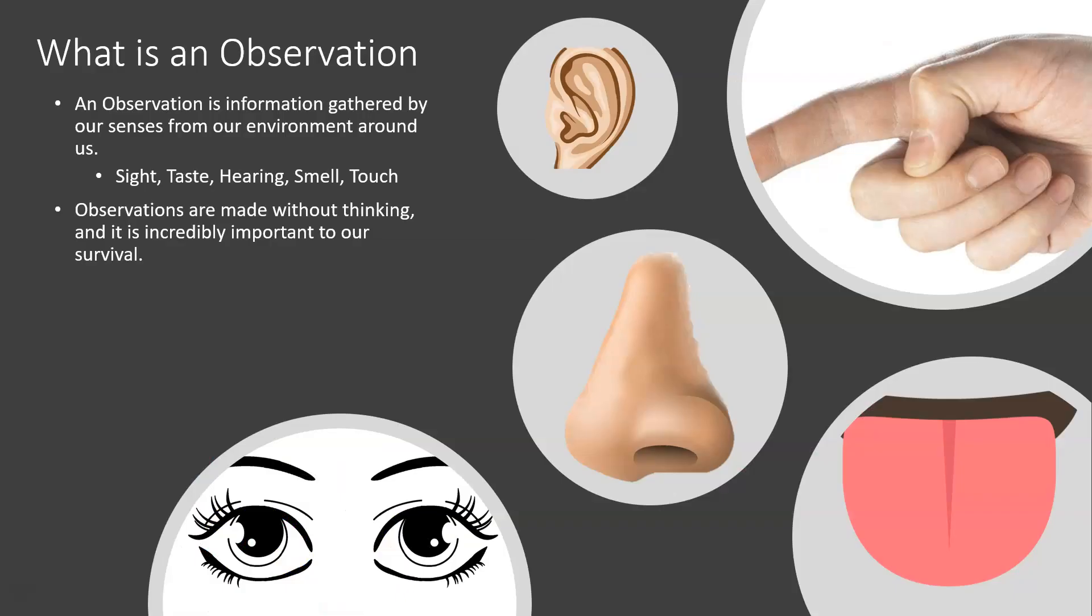And so, what is an observation, or what can be an observation? Observations are any bits of information that are gathered by our senses, and our senses, as you've learned since probably kindergarten, are anything that you use your senses for, like sight, taste, hearing, smell, touch.